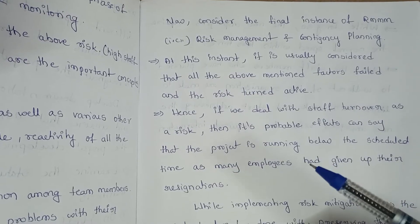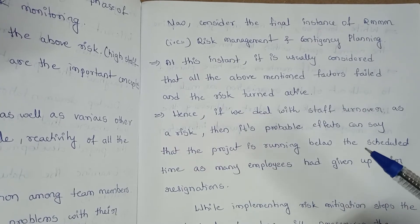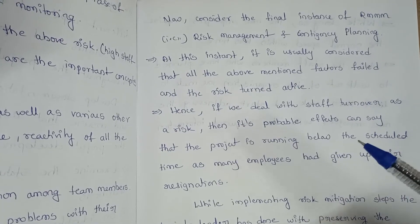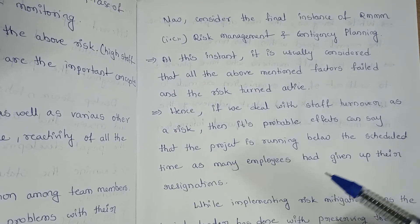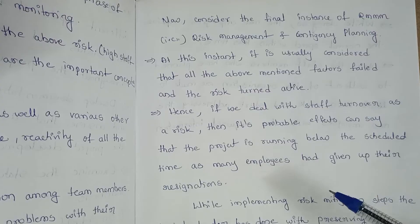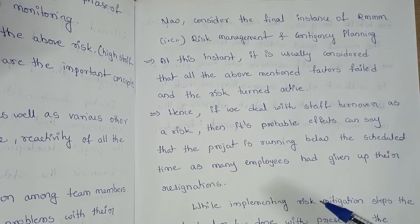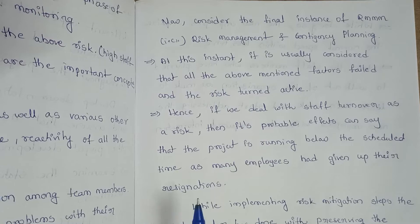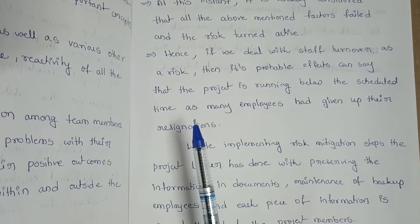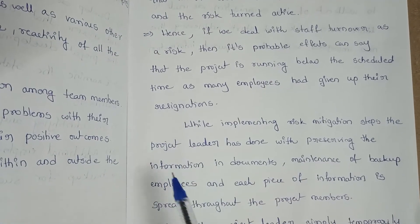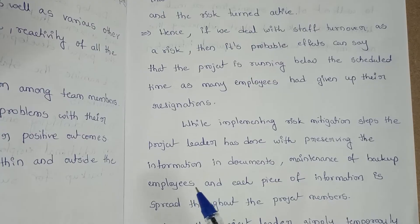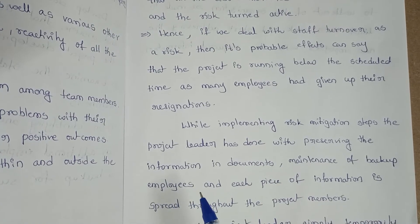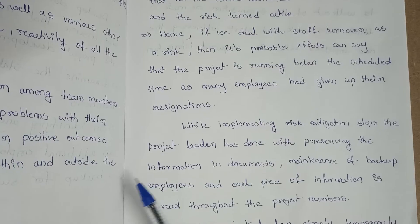It is usually considered that all the above-mentioned factors fail — that is, risk mitigation and monitoring fail — and the risk turns active. If we deal with staff turnover as a risk, its probable effect is that the project is running below the scheduled time as many employees have submitted their resignations. While implementing the risk mitigation steps, the project leader has already documented information, maintained backup employees, and spread each piece of information throughout the project members.